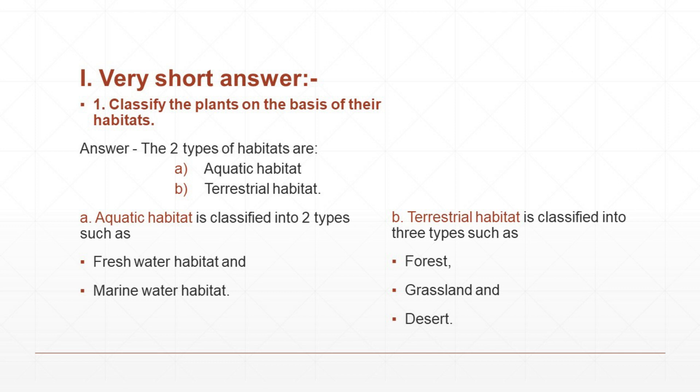First question: Classify the plants on the basis of their habitats. Answer: The two types of habitats are aquatic habitat and terrestrial habitat. Aquatic habitat is classified into two types such as freshwater habitat and marine water habitat. Terrestrial habitat is classified into three types such as forest, grassland and desert.